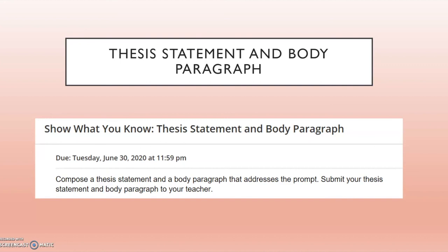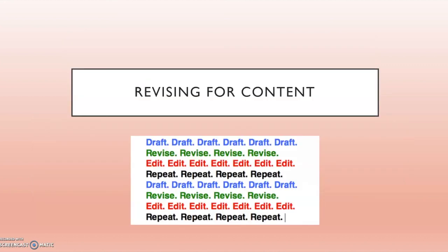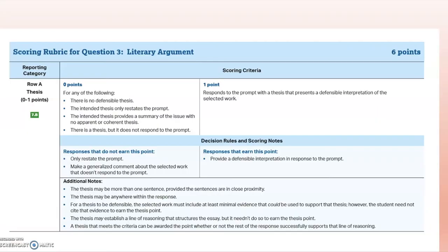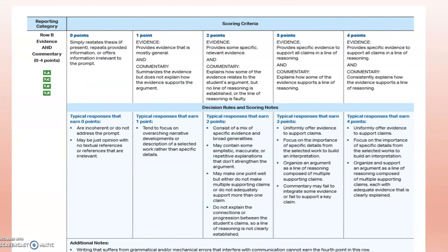So you've written your thesis statement and body paragraph. The second lesson for this week has us revise for content. In a previous week's lesson, you explored the revised AP rubric for question three. Now I invite you to revisit that rubric — you'll be revising the thesis and body paragraph based on that rubric. How does your response compare? In what areas did you excel, and in what areas might you need to improve? For the thesis statement, do you present a defensible interpretation of the work? For evidence and commentary, is your evidence specific? Does your commentary explain how the evidence supports that line of reasoning?